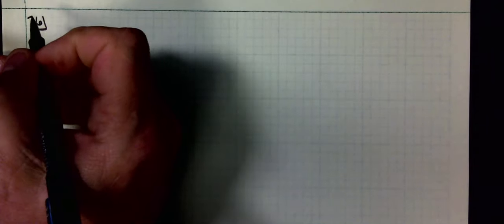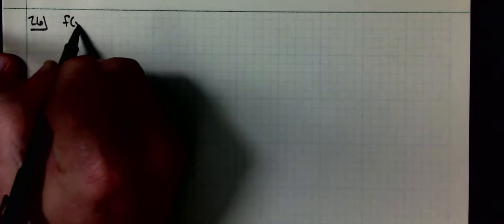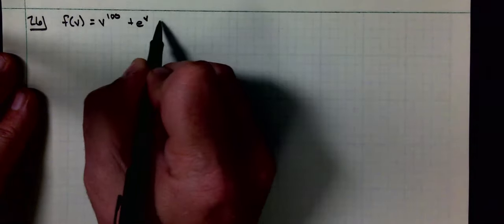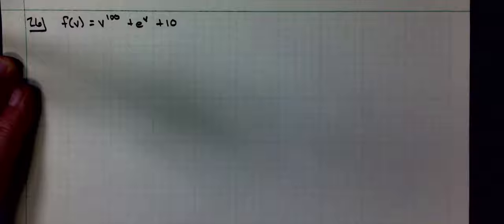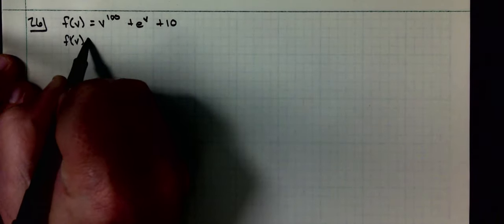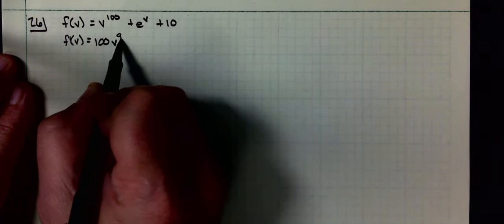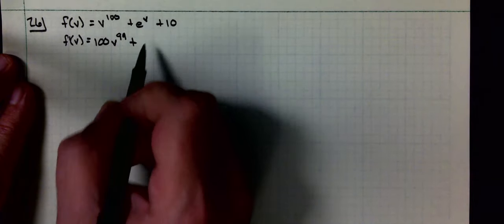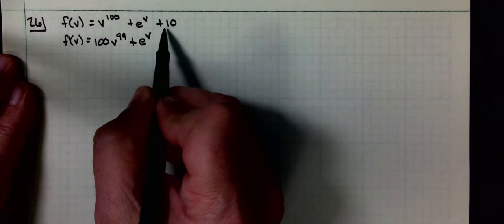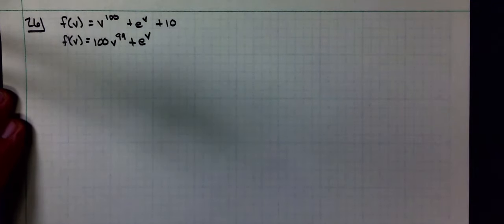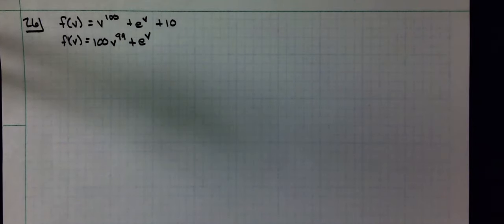Problem 26 tells us f of v equals v to the 100 plus e to the v, and they want us to find the derivative. The derivative with respect to v: multiply by the exponent, subtract one from the exponent, so 100v to the 99. Plus the derivative of e to the v is e to the v. The derivative of the constant 10 is just zero. We're done. That's how quick what would have been a very messy limit problem becomes.